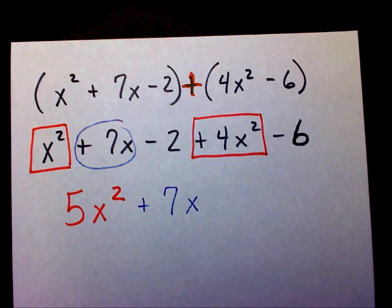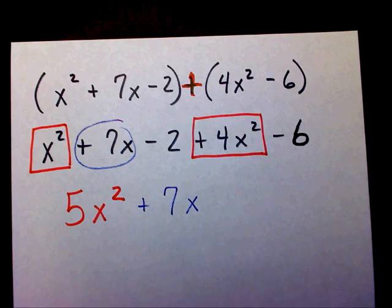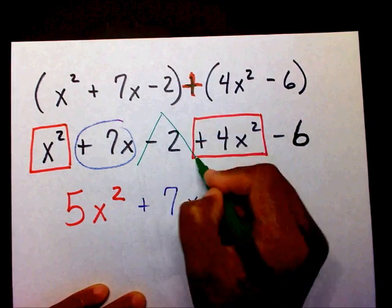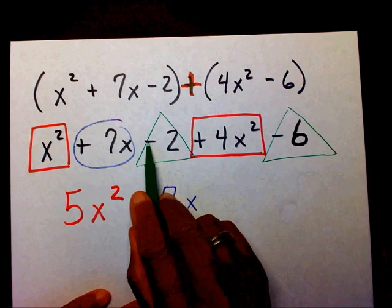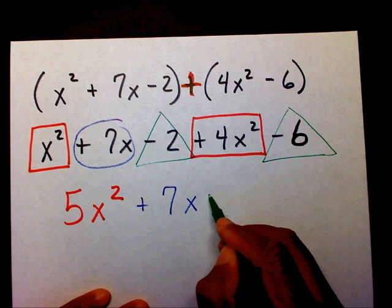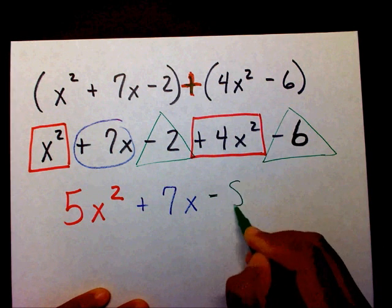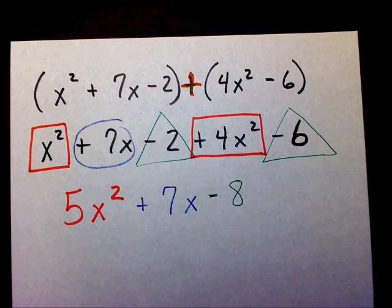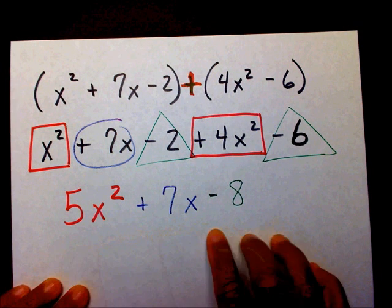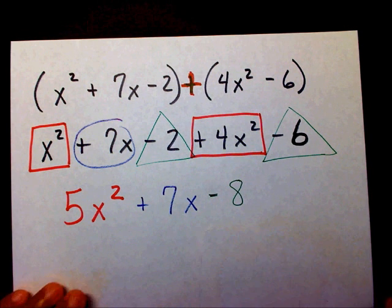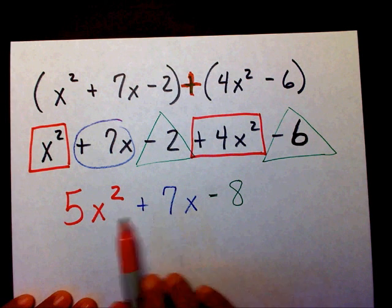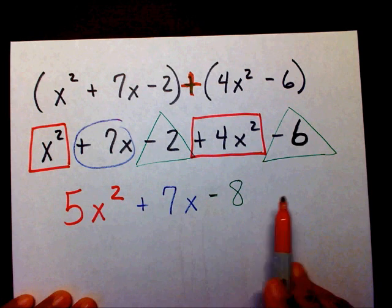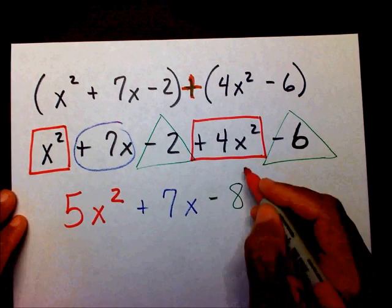Then I have minus 2 and minus 6, so minus 2 minus 6 is minus 8. So this is my final answer. You always want to make sure your exponents are in descending order. I have an x squared, I have an x, and I have a constant. So 5x squared plus 7x minus 8 is your final answer.